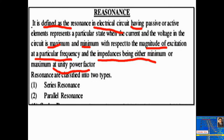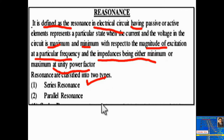Resonance is classified into two types: the first type is series resonance, and the second type is parallel resonance.